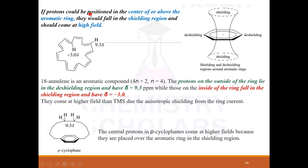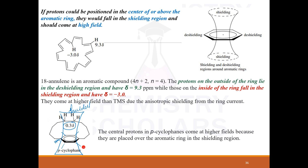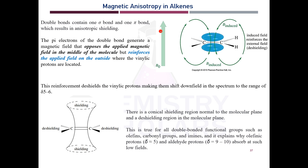So to remember: if protons are positioned in the center or above the aromatic ring, they fall in the shielding region; when they are in the plane of the ring, they fall in the deshielding region. Another example is paracyclophane — the shielded part is above the ring, so those protons appear upfield, while protons attached to the benzene ring appear downfield.